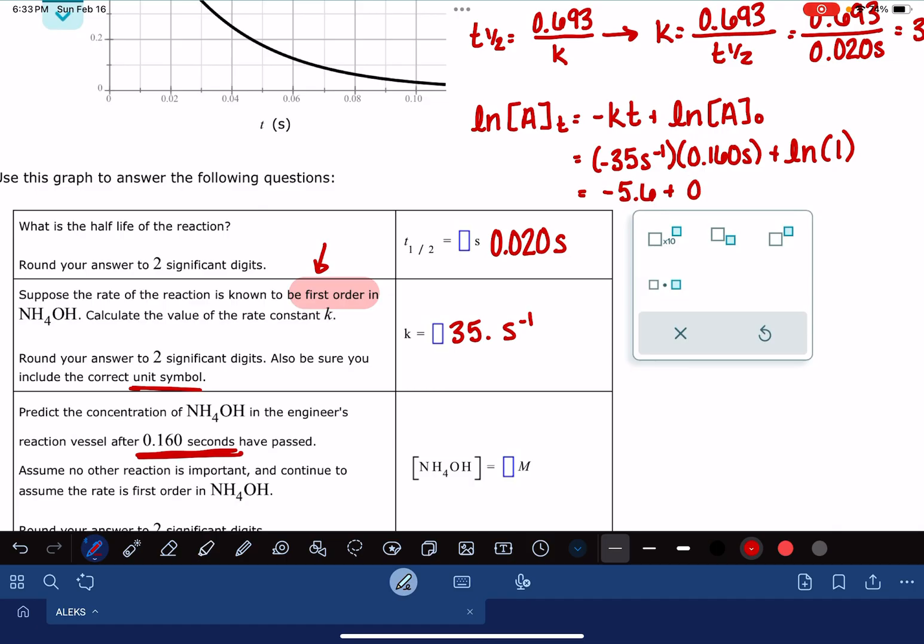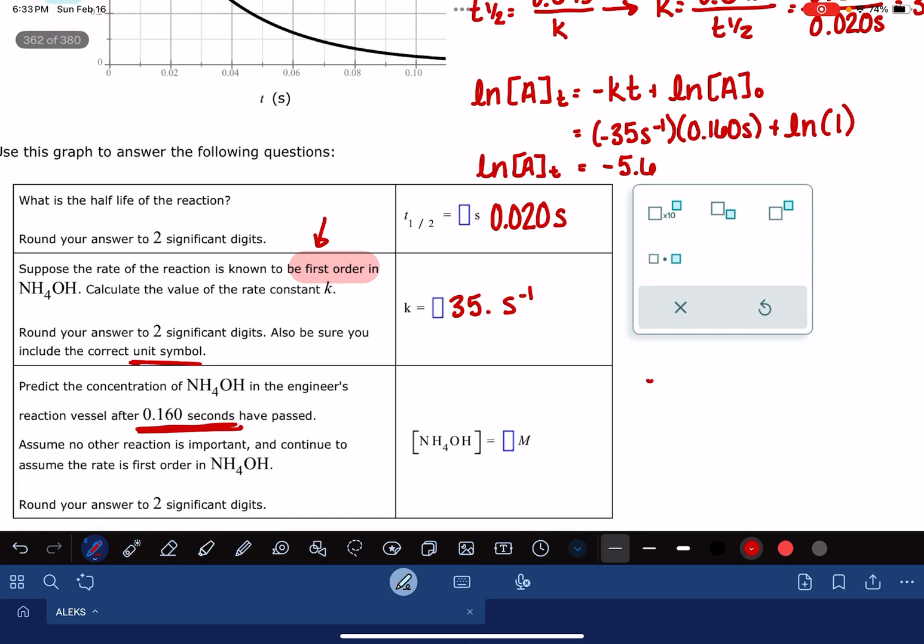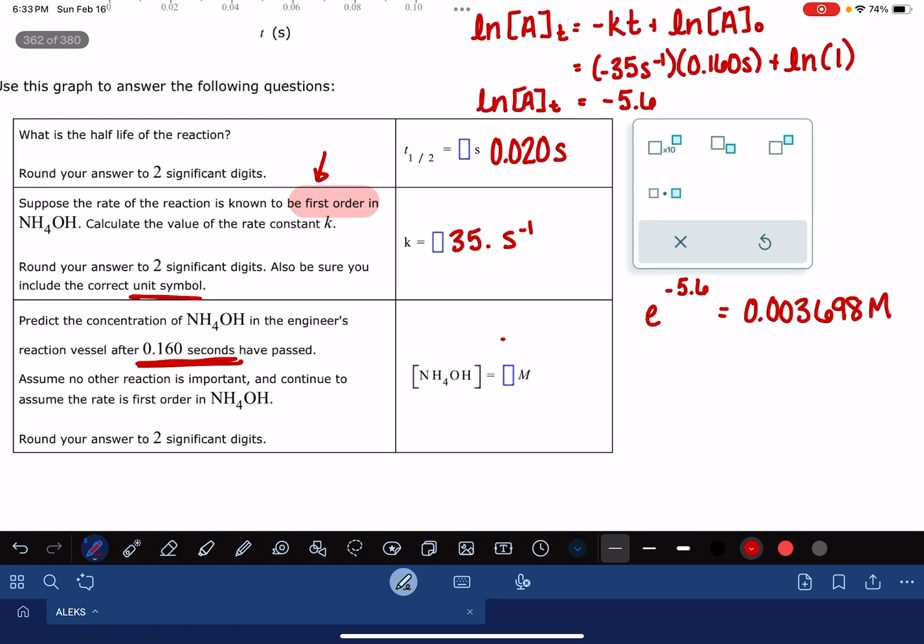and the natural log of 1 is just 0. So to solve for the concentration of A at time T, the equation that we use for that, or the operation that we use for that, is we take E to the negative 5.6, and that is E to the negative 5.6. And it wants that to 2 sig figs, so that's just going to be 3.7 times 10 to the minus 3. And that's all there is to it.